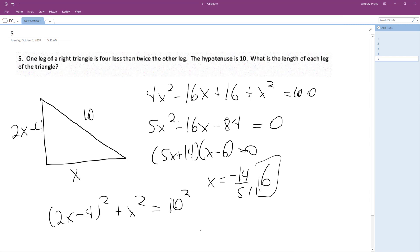So what is each leg? So one leg is going to be 6 units, and then 2x minus 4. So 2 times 6 is 12 minus 4 is 8.